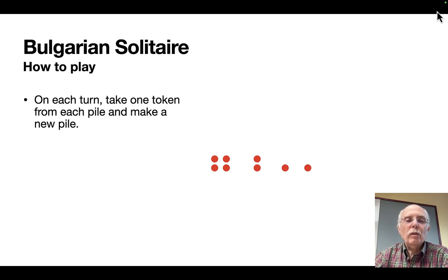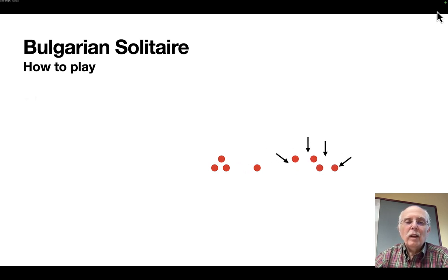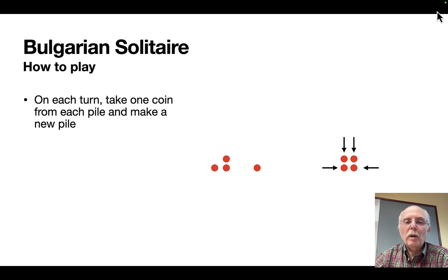Now on each turn, you take one token from each pile and make a new pile. The arrows are pointing to the tokens that I'm going to move. And we move those all to a new pile. You notice that the piles that had one token in it actually disappear.